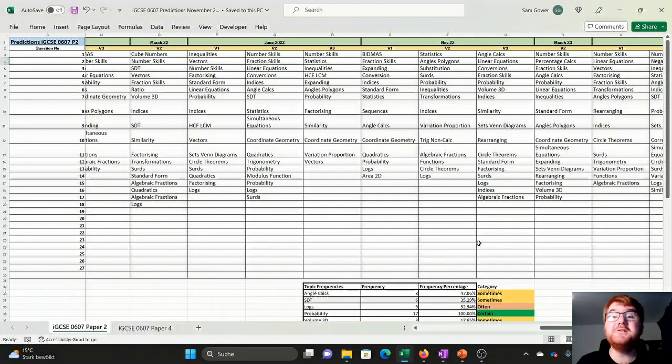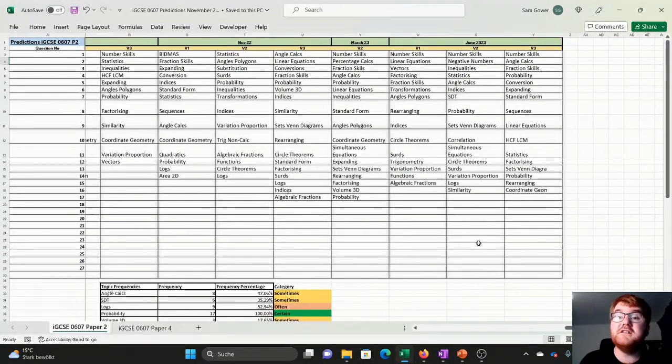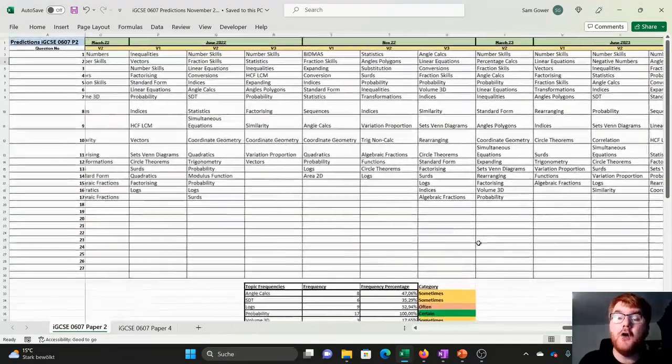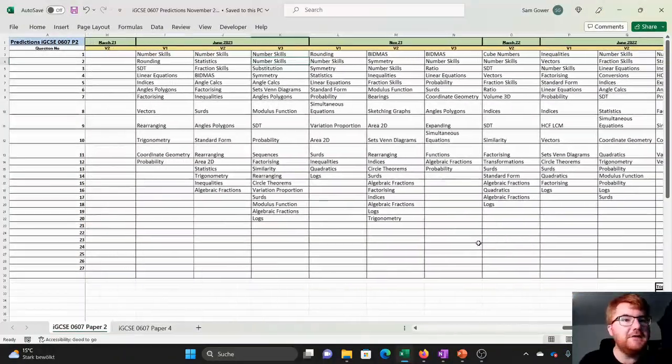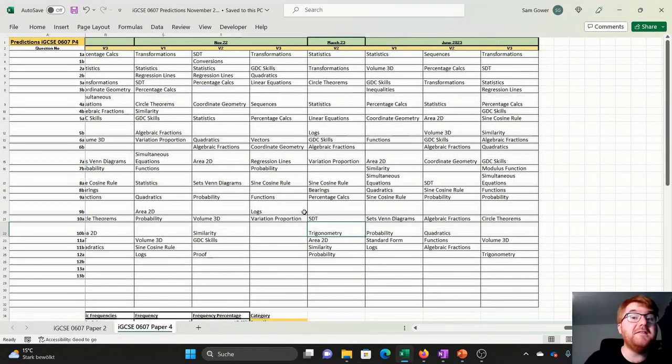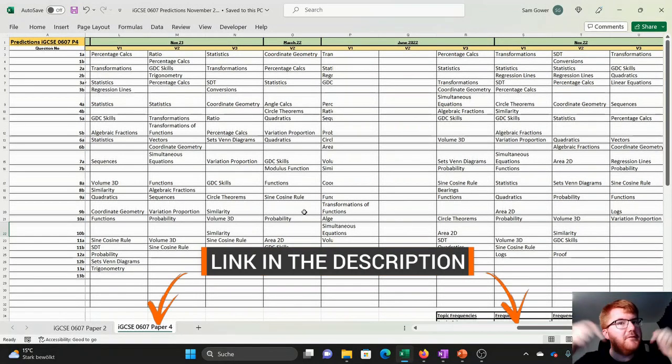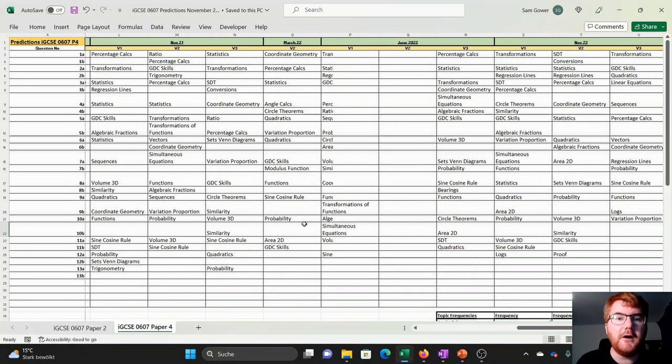And a bonus part of the video here. So you can see I have tracked all the different questions that have appeared on the past papers all the way back to June 2021. So you get a really good spread of exactly how the papers are structured, both for IGCSE 0607 Paper 2 and the Paper 4 as well. Again, if you want a copy of this, you can download it. Again, I'll put that in the description for you as well.